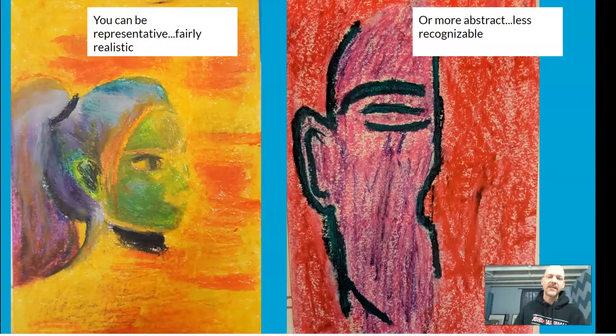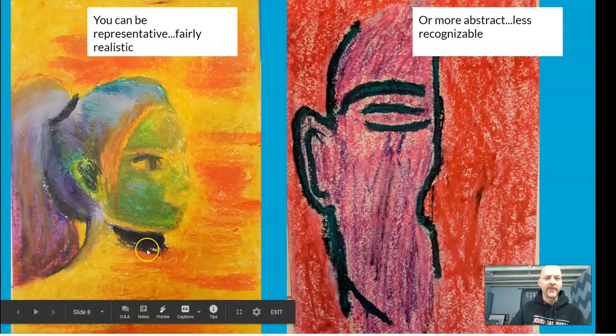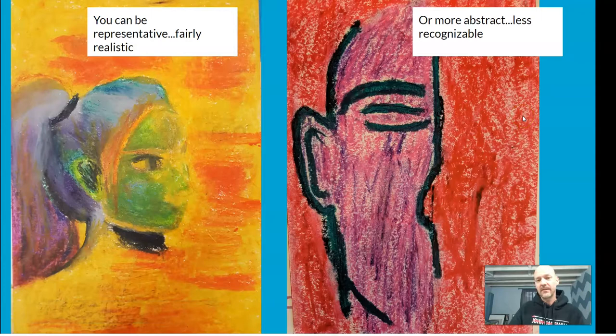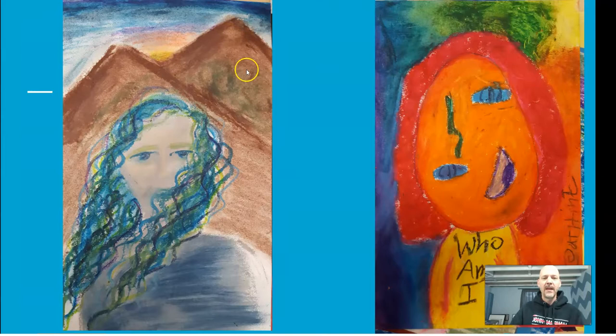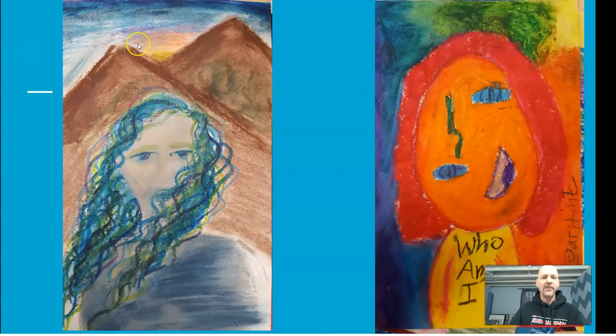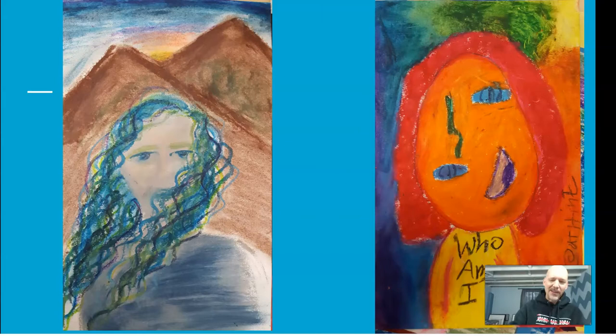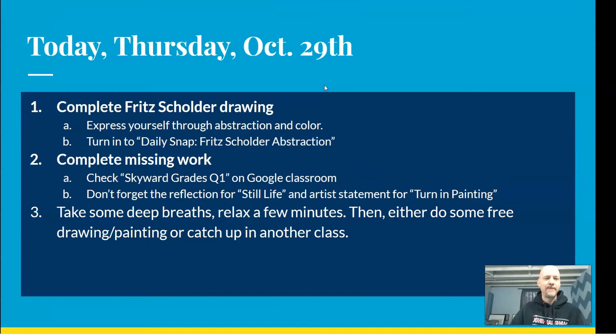You're going to come up with an abstract figure — you don't have to be exactly like Scholder. I'm asking you to work intuitively and balance accident and discipline. You can be fairly realistic like the one on the left, or more abstract like the one on the right. Have fun, be loose — we're thoughtfully playing. The one on the left shows a person very somber, cool, calm, with nature in the background. The one on the right has a lot going on — even words like 'who am I' — that person is expressing confusion about identity.